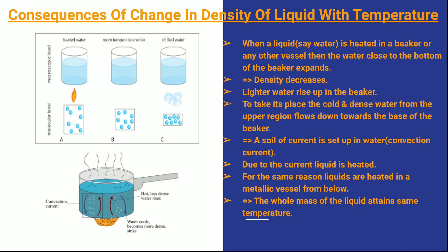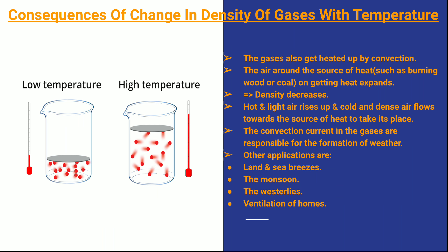Due to this convection current, the liquid — in this case water — is heated. For liquids heated in a metallic vessel from below, the whole mass of the liquid attains a uniform temperature due to this convection current.